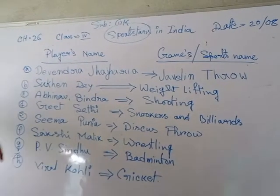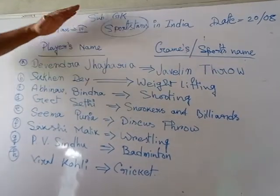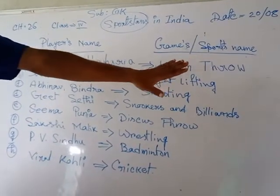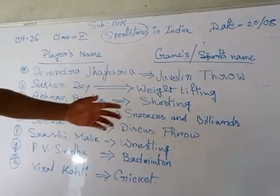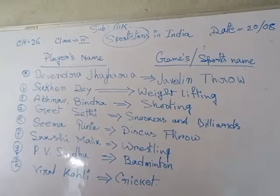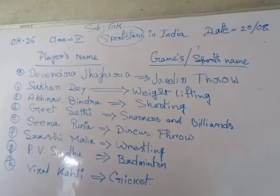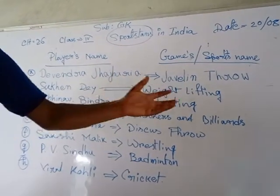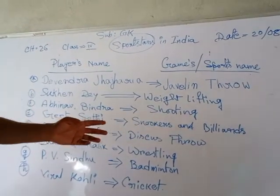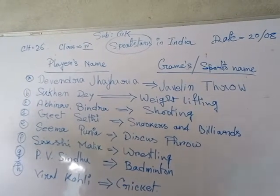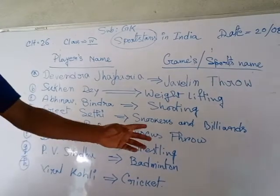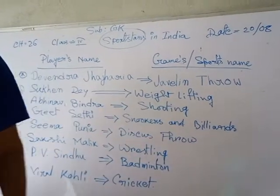So you should learn these players' names and the names of their games. Javelin throw means throwing with a javelin. Weightlifting means you lift weighted things following specific rules. Shooting means you shoot at a target.